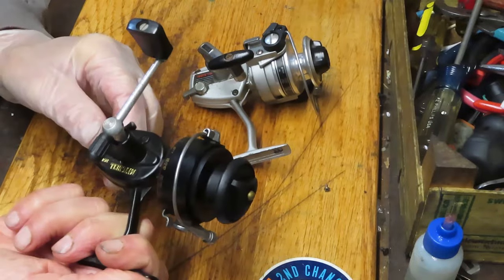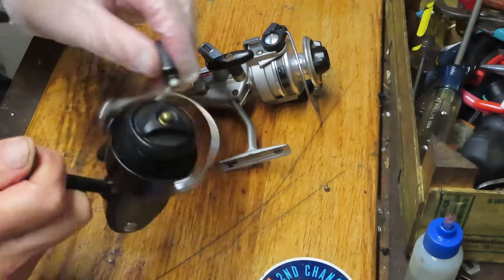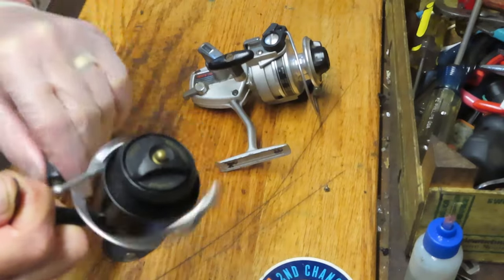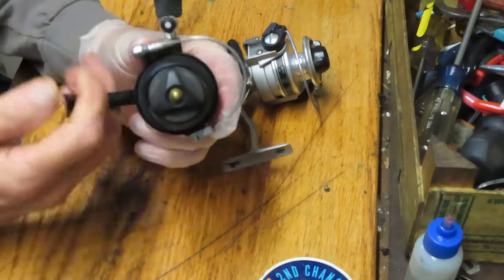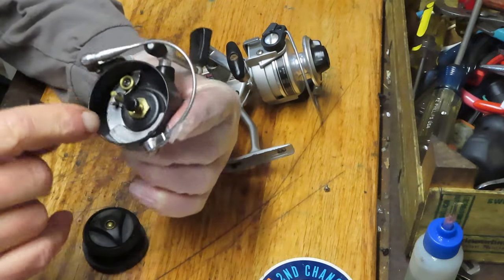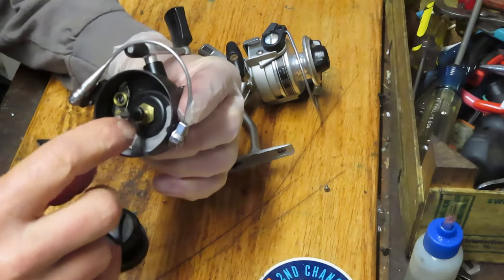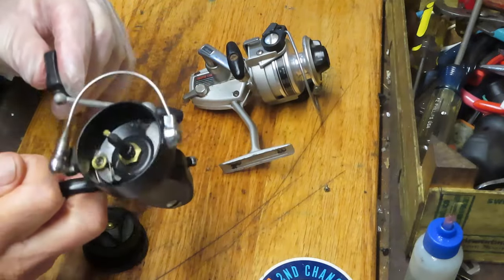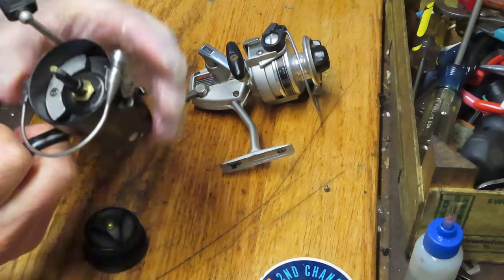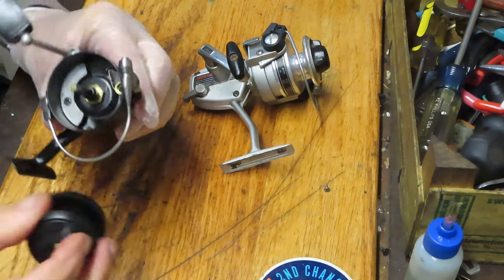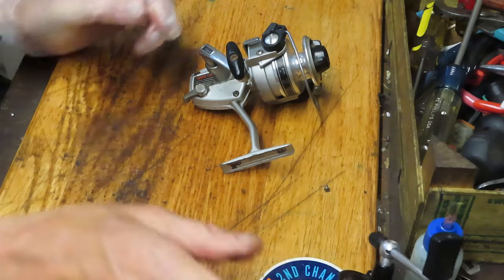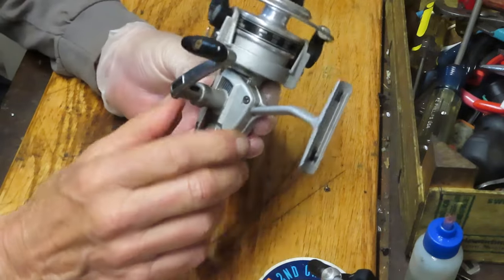The other one's got a click, click, click issue to it as well. This is the Mitchell 308 and even when you take the anti-reverse off you're hearing a click. Now generally that one's associated with this trip lever being bent so that as it's coming around here on that trip it's hitting that stud. So it's not fully returning or it's bent, one or the other. We're going to work on both of these reels but right now I'm going to work on the International 10.